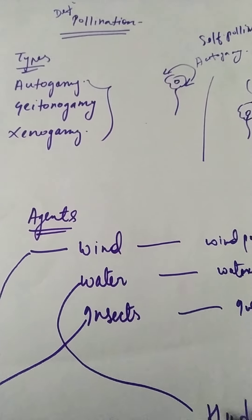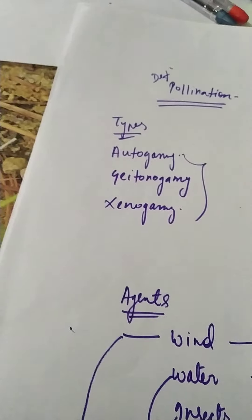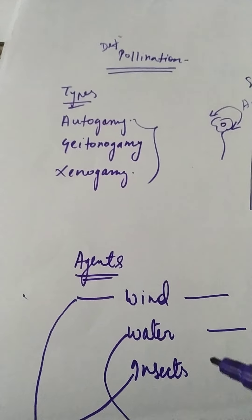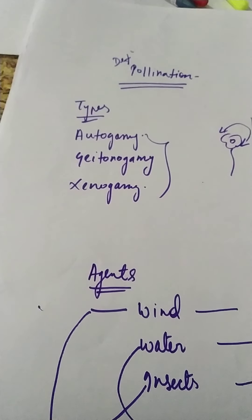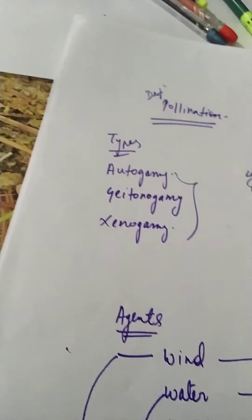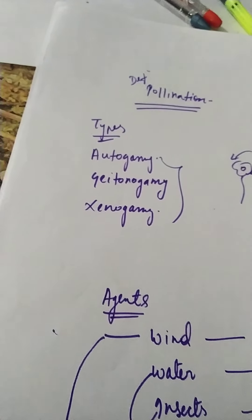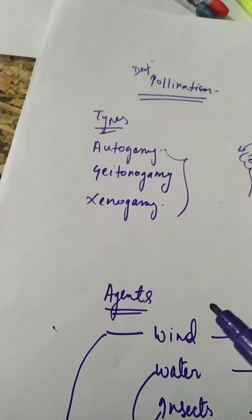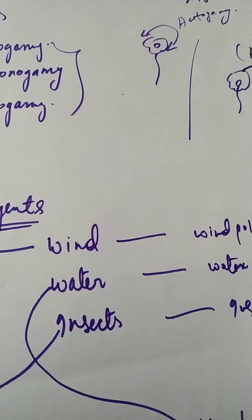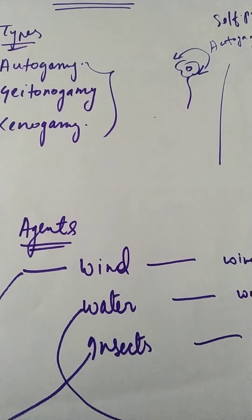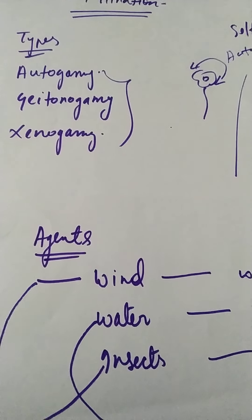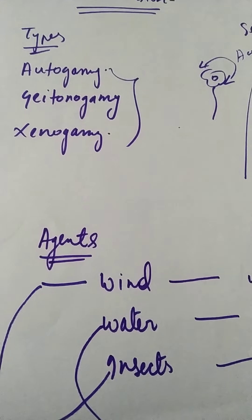Remember wind pollination, water pollination, and insect pollination — their characteristics will be different. The main important question is how pollen is transferred from one flower to another, and there is one main important thing related to that transfer.